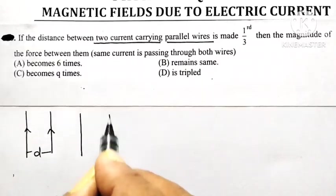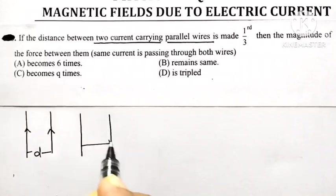And here it was given distance between two current-carrying parallel wires is made one-third. So the distance of separation between them is reduced to d by 3.